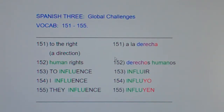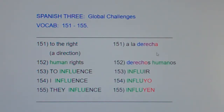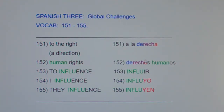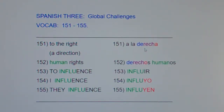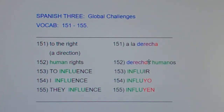Everybody say derecha. Now say derecho. They both mean right. Derecha with an A is a direction, and derecho with an O is like a human right — O, you have the right to remain silent, you have the right to an attorney. How are we going to remember that derecha is right direction? Reach to derecha — R-E-C-H looks like reach, so reach to derecha. A is a direction and O is a human right.